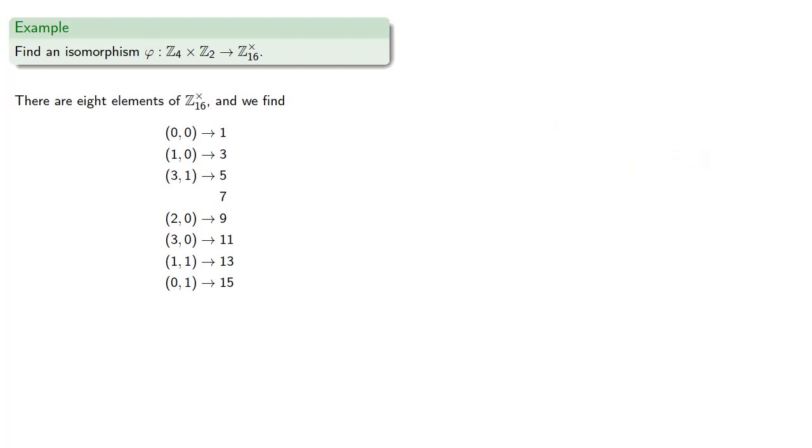And at this point, 7 is the only element that doesn't have a preimage, and this leaves the last element, (2, 1), must be mapped to 7, which completes our isomorphism.